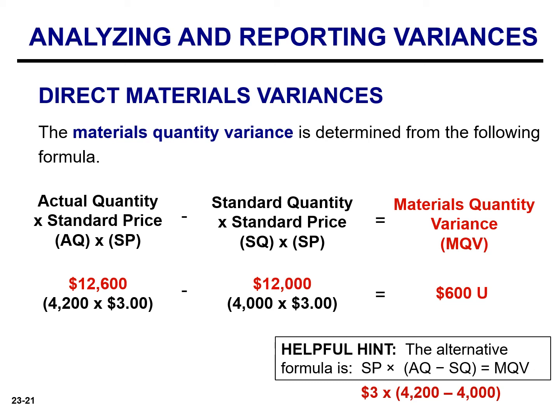You can determine that it's unfavorable by comparing the actual quantity used, 4,200 pounds, to the standard of 4,000 pounds — actual quantity exceeds the standard. When calculating the material quantity variance, my preference is to use the alternative formula.